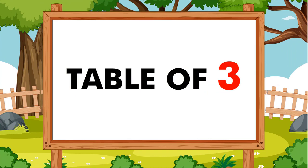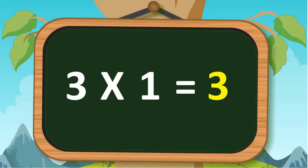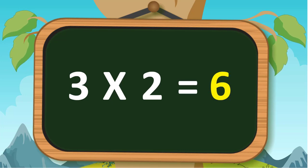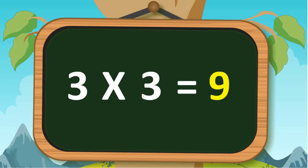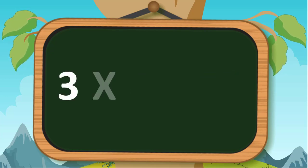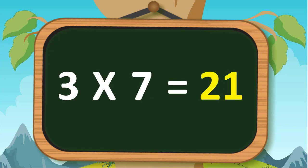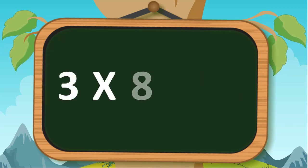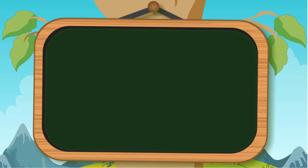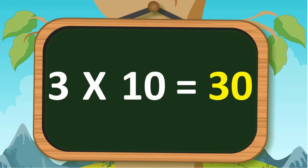Hello children, today we will learn table of three. Three ones are three, three twos are six, three threes are nine, three fours are twelve, three fives are fifteen, three sixes are eighteen, three sevens are twenty-one, three eights are twenty-four, three nines are twenty-seven, three tens are thirty.